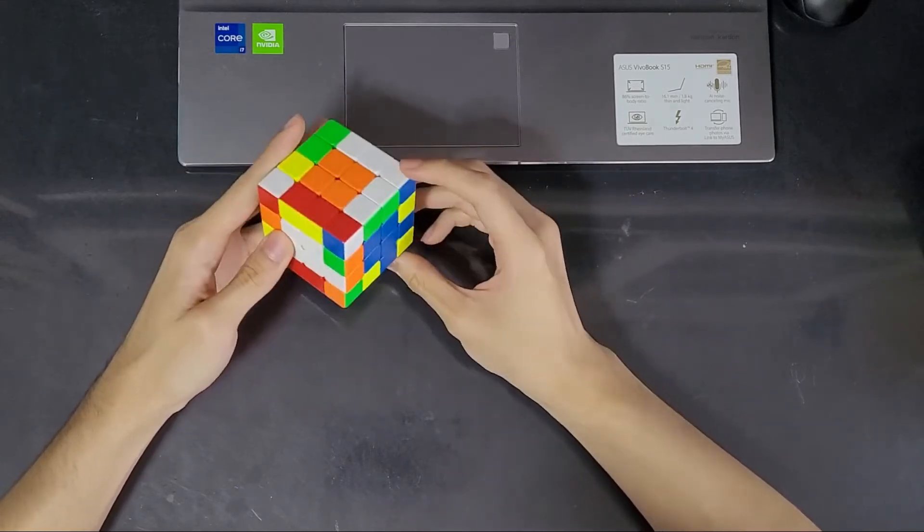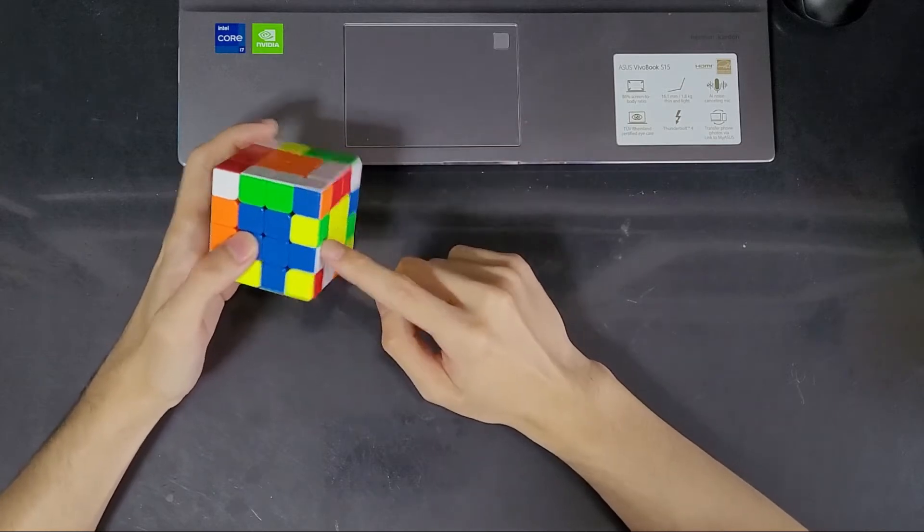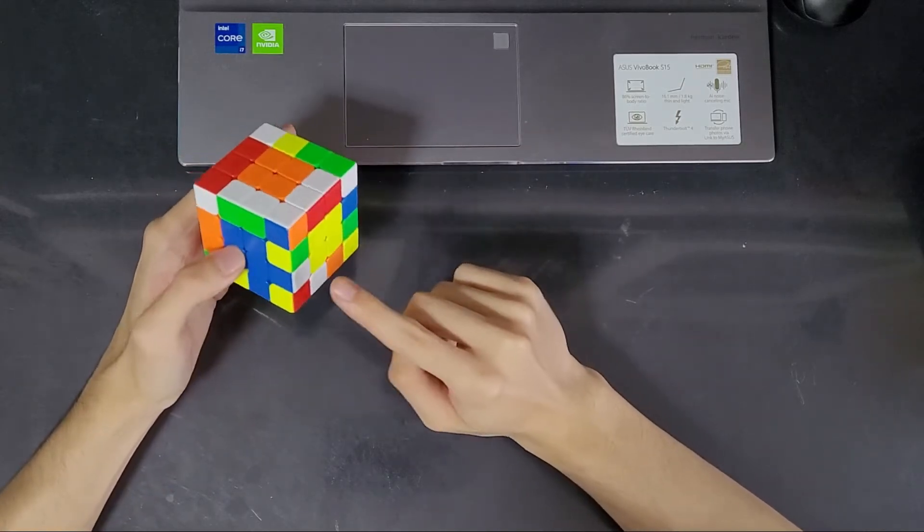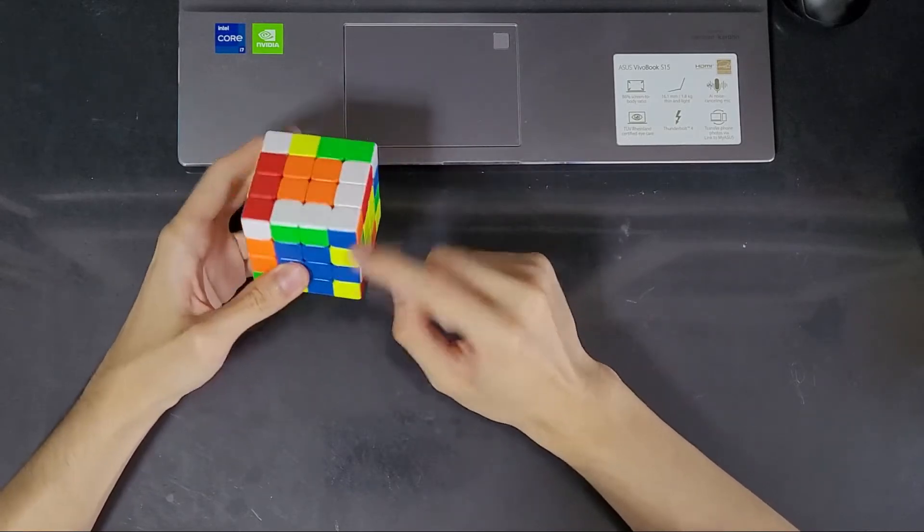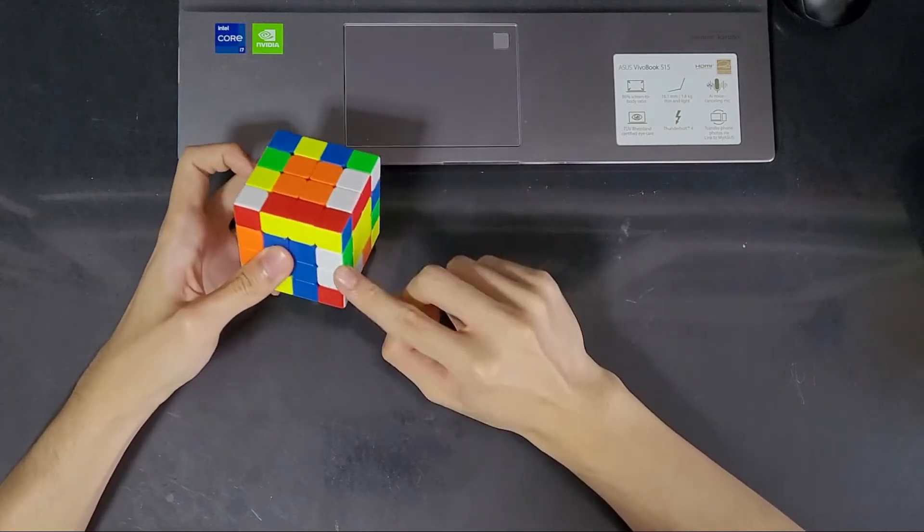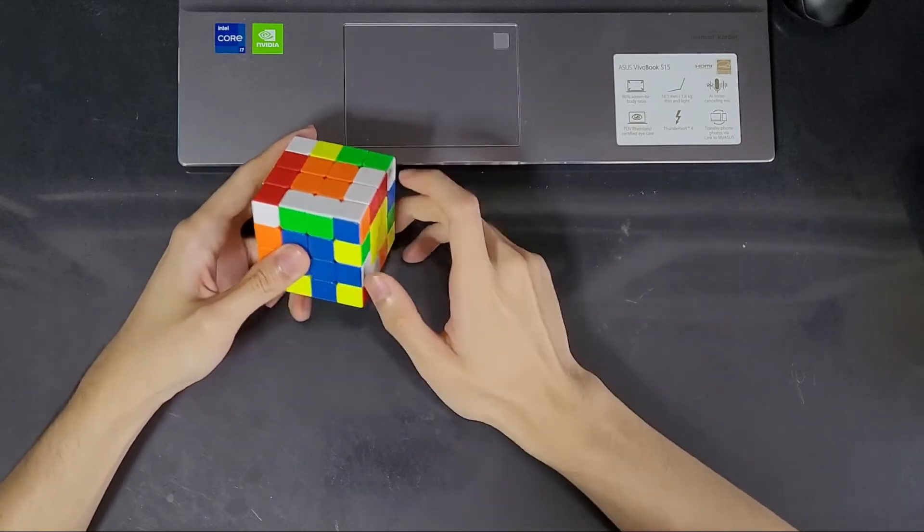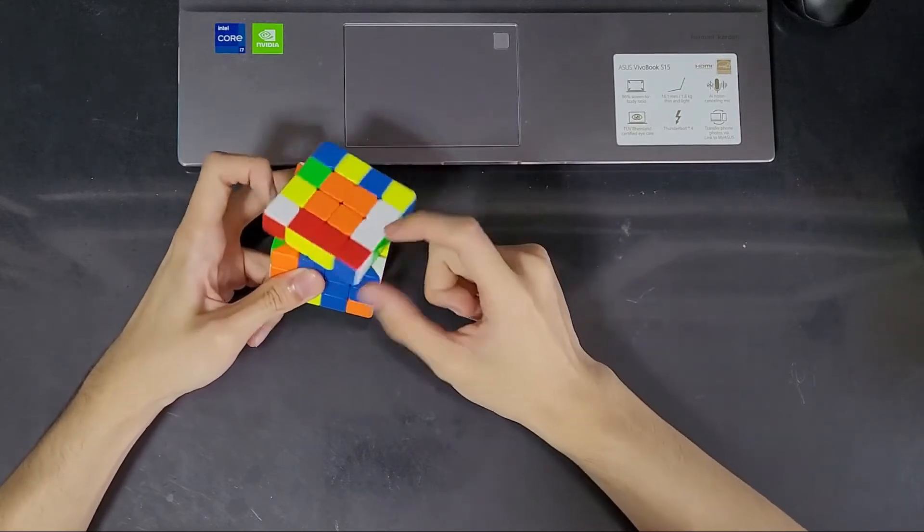So what you can do instead is, you can actually, while the centers are aligned, you can intentionally take scrambled edges out of the equator by pulling solved edges into their spots like that. So again, let's do it more slowly. Slot up, move it into the slots, slot down.